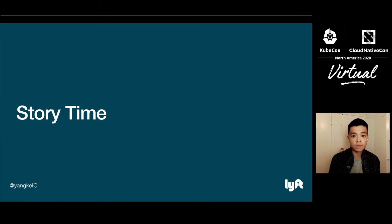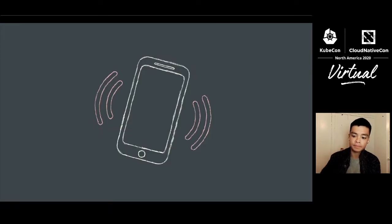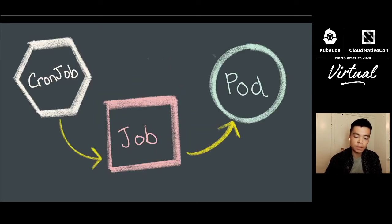But first, let's start with some story time. It's generally good practice to have observability for your cron tasks to make sure that you're alerted when they fail. At Lyft, developers do so most commonly by emitting metrics in their application code and use our alerting system to page the on-call when those issues happen. So let's imagine you're a developer at Lyft, and you're just paged for a cron job failure, and it is your job to investigate what's going on.